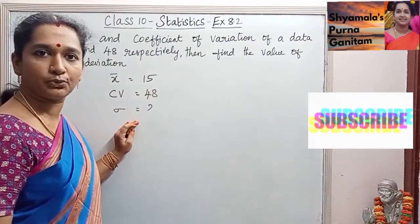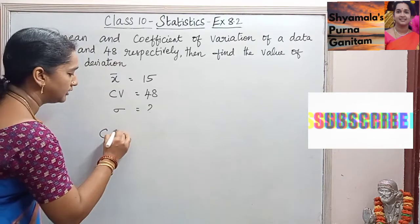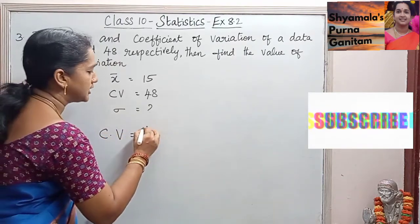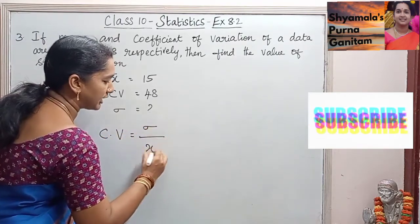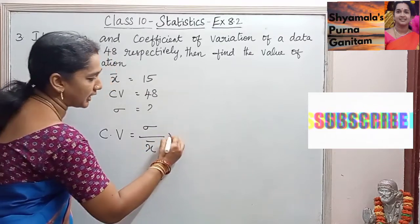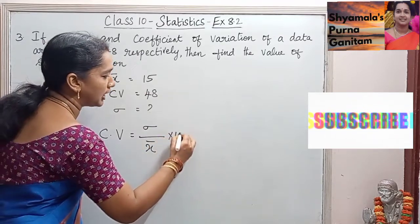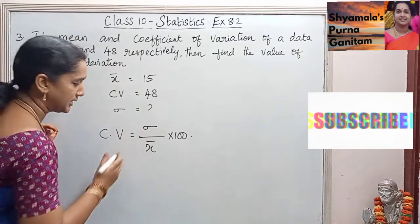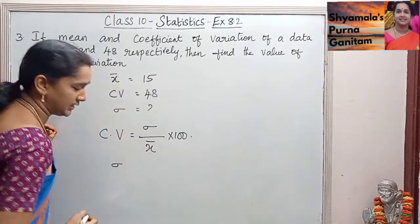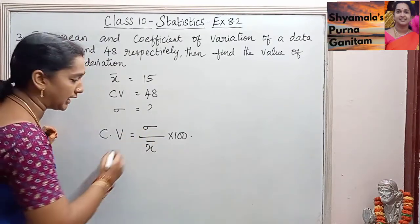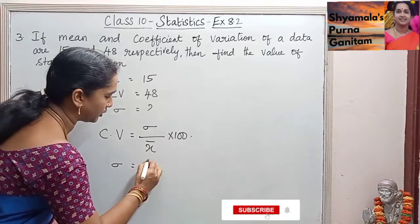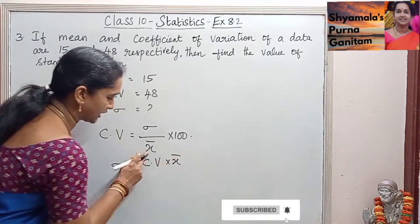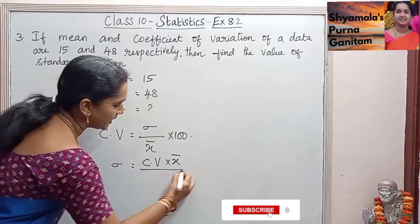So we know the formula: coefficient of variation is equal to standard deviation divided by arithmetic mean, that is x̄, into 100. We will rearrange the formula as standard deviation is equal to coefficient of variation into x̄ divided by 100.